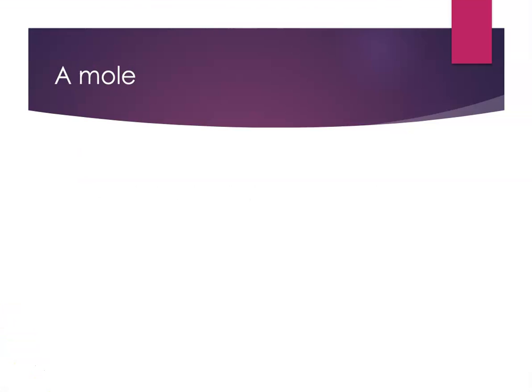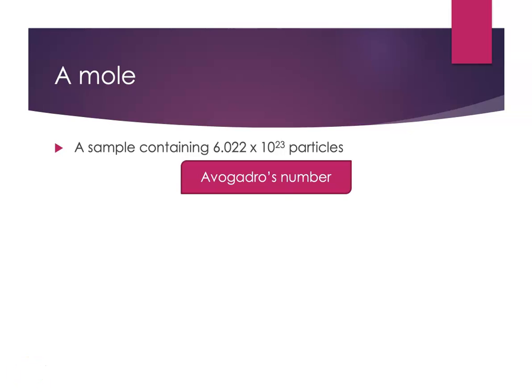In order to do these problems successfully you need to know what we mean by a mole. It's the chemist's favorite unit for chemical quantities. A mole is defined as a sample that contains 6.022 times 10 to the 23rd particles — representative particles: atoms of an element, molecules of a covalent compound, formula units of an ionic compound. That's Avogadro's number, and it's a really important number. You should memorize it — you're going to use it all the time.